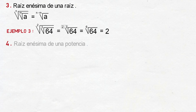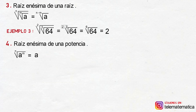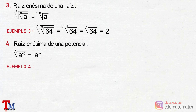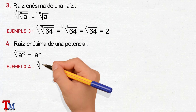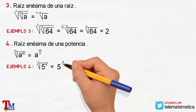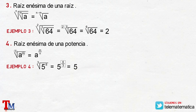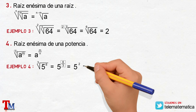Cuarta propiedad: raíz enésima de una potencia. Se define como raíz enésima de A elevado a la M; esto va a ser igual a conservar la base del subradical y, como exponente, el cociente entre el exponente del subradical y el índice del radical. Veamos un ejemplo: raíz cúbica de 5 elevado a la sexta. Aplicando la propiedad, nos quedaría 5 elevado al cociente 6 tercios. Resolviendo la división, nos quedaría 5 elevado al cuadrado y, resolviendo la potencia, esto sería igual a 25.